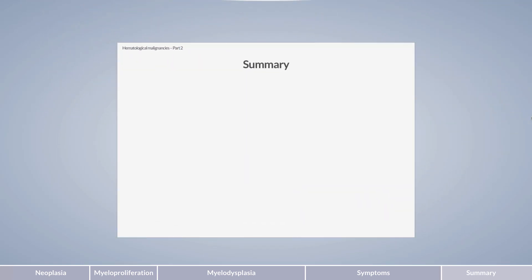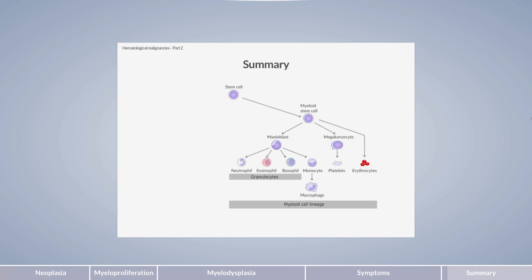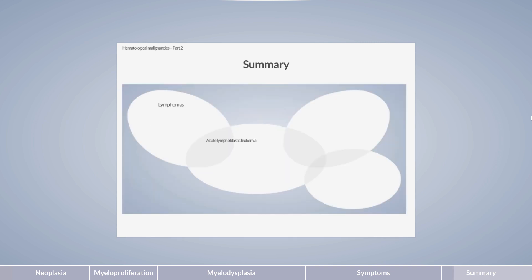To summarize: there are two major cell lines, namely the myeloid and lymphoid cell lines. Acute lymphoblastic leukemias and lymphomas belong to the lymphatic disorders. Myeloid disorders comprise acute myeloid leukemias as well as myeloproliferative and myelodysplastic disorders. The various disorders are based on the malignant transformation of different blood cells. Clinical symptoms depend on the type of blood cell affected and whether there is an impaired proliferation rate, impaired differentiation, or both.